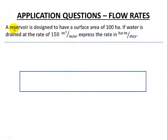Here's another example for flow rates. We have a reservoir designed to have a surface area of 100 hectares. If water is drained at the rate of 150 cubic meters per minute, we want to express that rate in hectare meters per day.